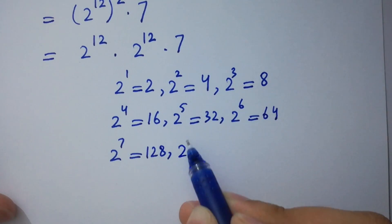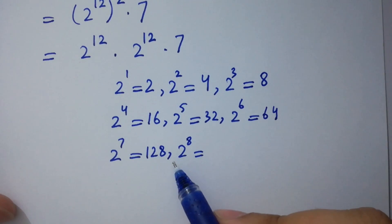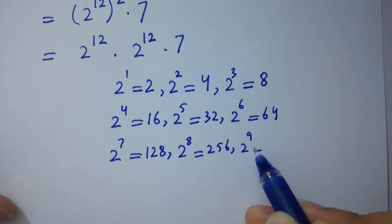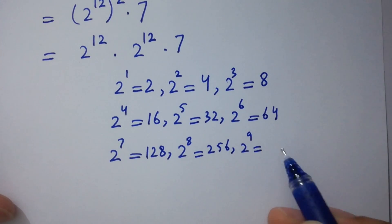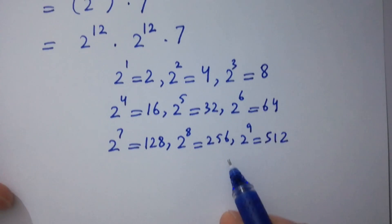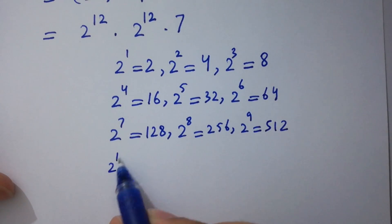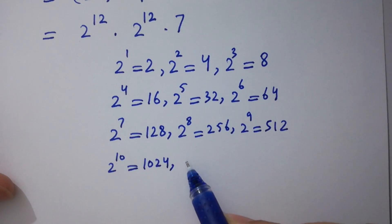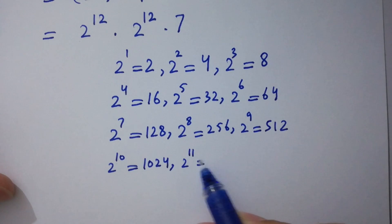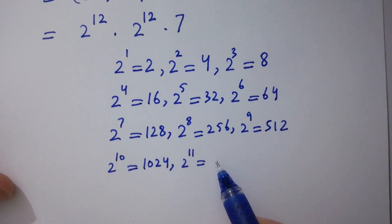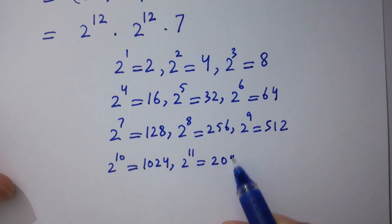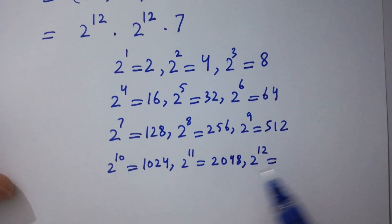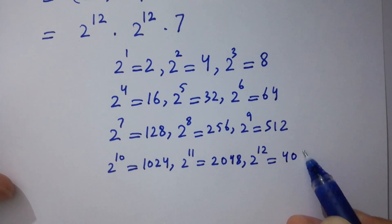2 to the power 7 equals 128; 2 to the power 8 equals 256; 2 to the power 9 equals 512; 2 to the power 10 equals 1024; 2 to the power 11 equals 2048; 2 to the power 12 equals 4096.